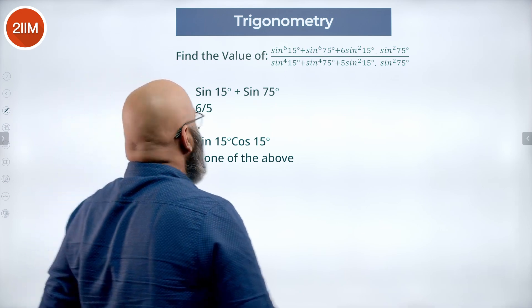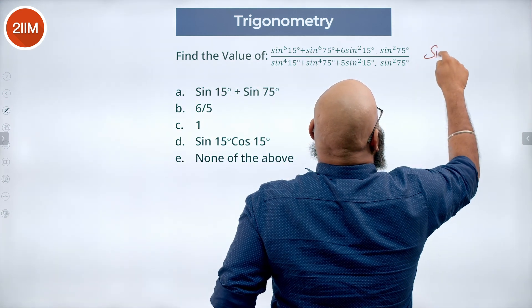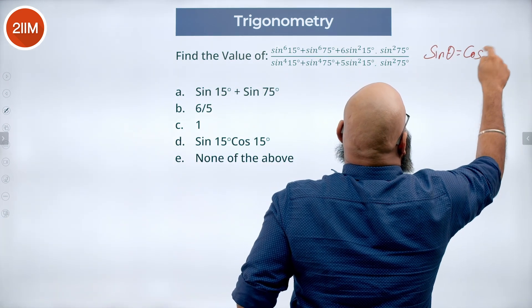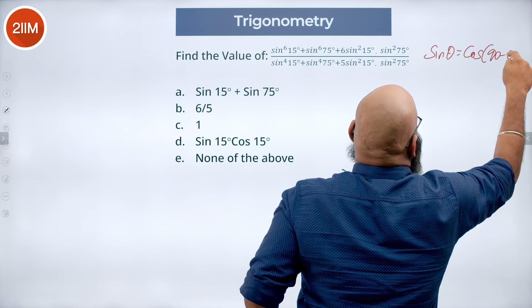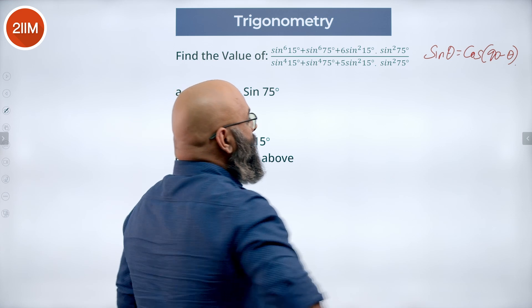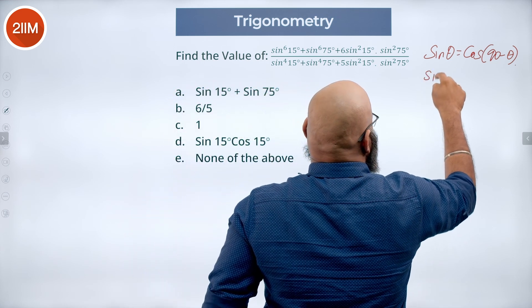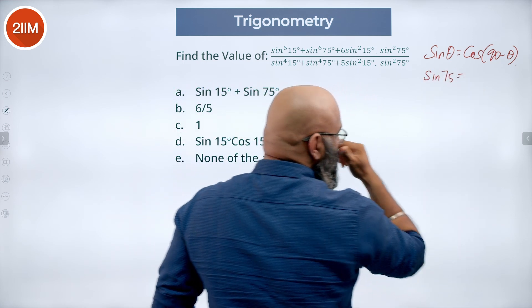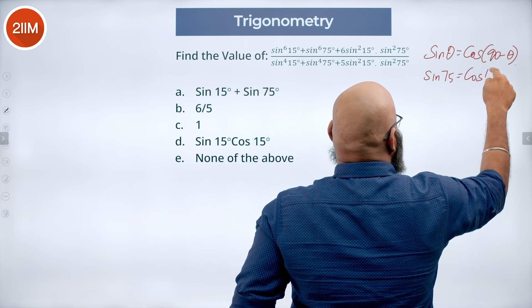Now we know that sin theta is equal to cos of 90 minus theta. Now I see here I have sin 75, so I can call it as sin 75, cos 90 minus 75 gives me cos 15.